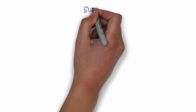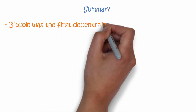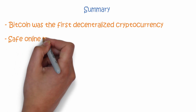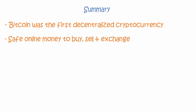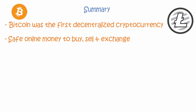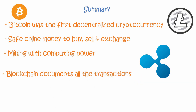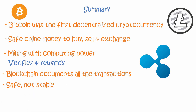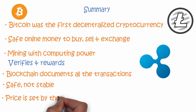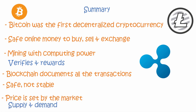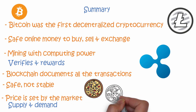Let's now summarize the video. Bitcoin was the first decentralized cryptocurrency, developed in 2007. Cryptocurrencies are safe online money that can be used to buy, sell and exchange for different stuff globally. There are over 1600 different cryptocurrencies like Litecoin, Bitcoin and Ripple. Cryptocurrencies are created with mining — not with big axes but with computing power. Blockchain documents all the transactions, and mining these blocks verifies the transactions and rewards miners with currencies, making cryptocurrencies safe. Even though cryptocurrencies are safe, they are not stable but very volatile. The price is set by the market: when demand rises the price rises, and when supply rises the price falls. And the most important thing — you can buy two pizzas with 118 million dollars.